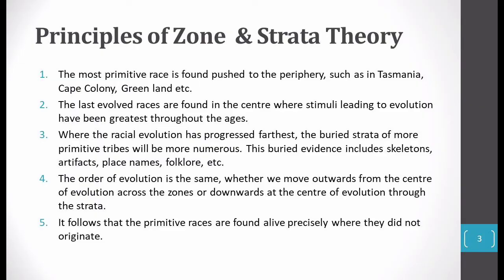The second principle: the last evolved race — the most new race — is in the center. The center is the point where, in early times, new races' evolution took place. So the first and second principles are: the most new races are in the central part, and the most old races are in the periphery.